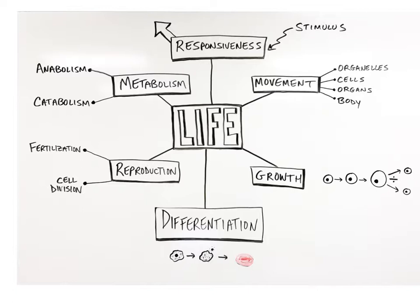Many body cells are adapted to respond to specific types of stimuli. For example, skeletal muscle cells respond by contracting and shortening their length, which pulls and moves the bone they are attached to. Neurons respond by producing nerve impulses called action potentials, which are fast-moving electrical signals that allow neurons to communicate with each other or other excitatory cells.